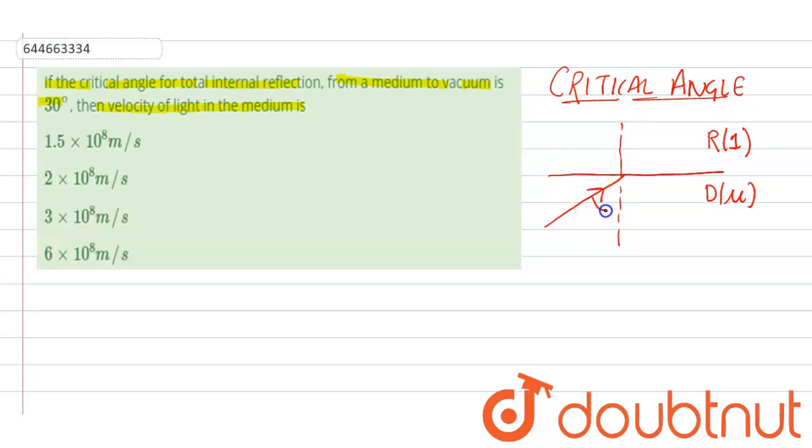So the critical angle is that angle of incidence in denser medium for which angle of refraction is 90 degrees. Then this angle of incidence is called critical angle and the relation between refractive index and critical angle is mu equal to 1 upon sin c.